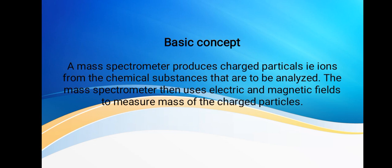We're going to go to the basic concept of mass spectrometry. A mass spectrometer produces charged particles, that is ions, from the chemical substances that are to be analyzed. The spectrometer then uses electric and magnetic fields to measure the mass of the charged particles.